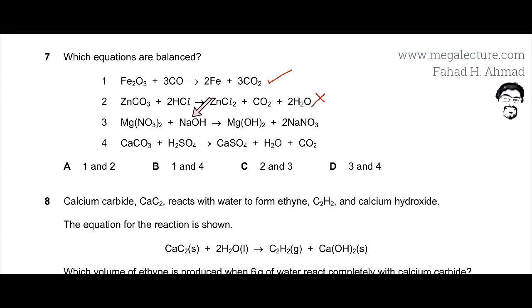Na is, there's one Na over here, and there are two sodiums on the other side, two sodium nitrate molecules, formula units, so that's two sodiums on the right hand side. So this equation is not balanced, because if you look at sodium, it's not balanced.